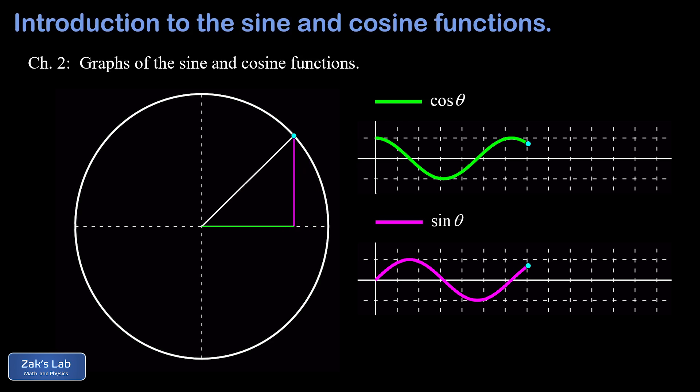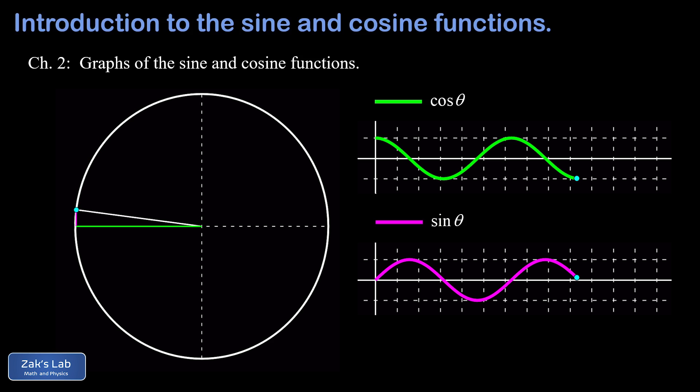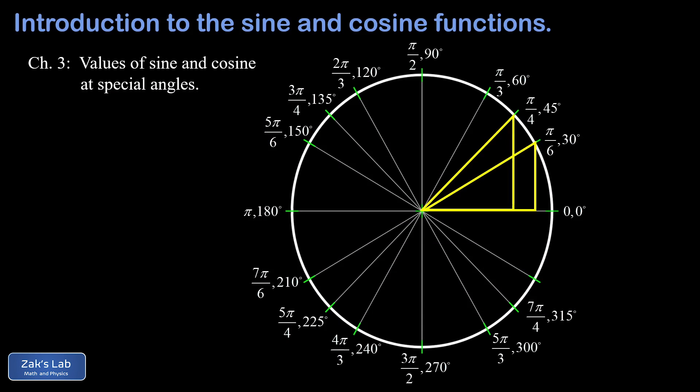After defining sine and cosine, we're going to figure out how to sketch their graphs. We'll see why sines and cosines are really the building blocks of the mathematics of waves. Finally, we're going to learn how to evaluate the sine and cosine functions in exact form at the special angles, using only two special triangles to navigate the entire unit circle.